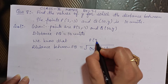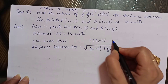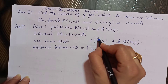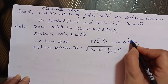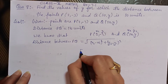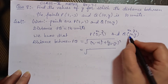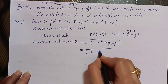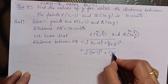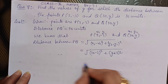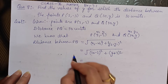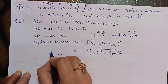Now, we have P coordinate (2, -3) and Q coordinate (10, y). So P is (x1, y1) and Q is (x2, y2). The distance between P and Q is equal to 10 units.